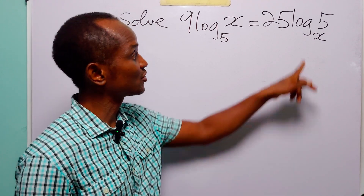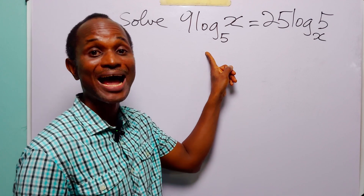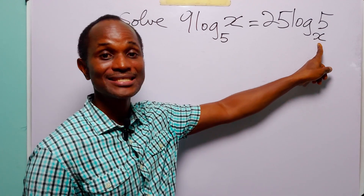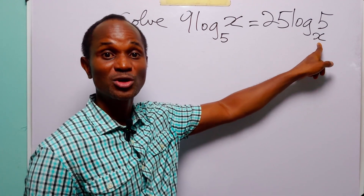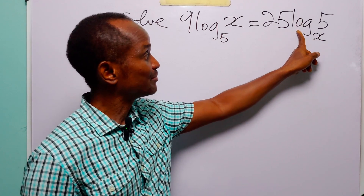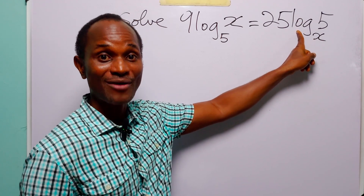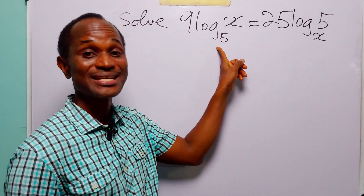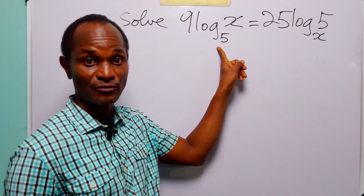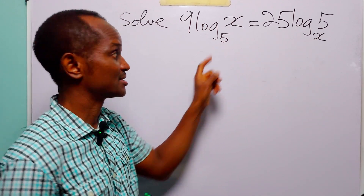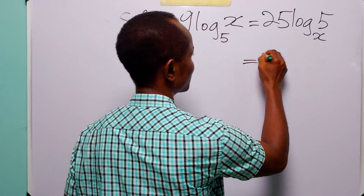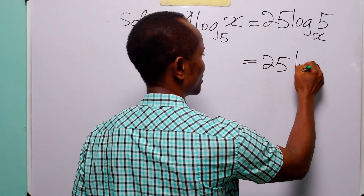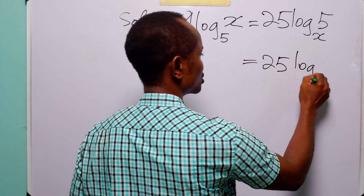...you're going to do is to make sure that these two log terms are in the same base. Since x is the unknown, you must change the base of the logarithm on the right-hand side from base x to base 5. And this is how you change the base: you have 25 and you have log to the new base...